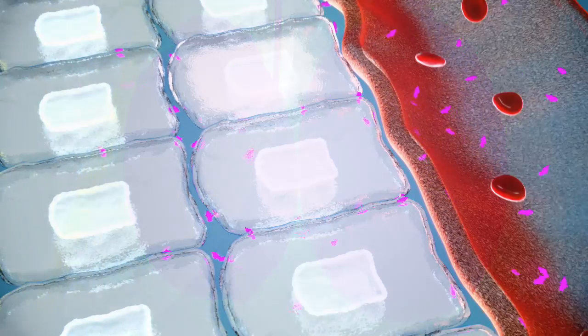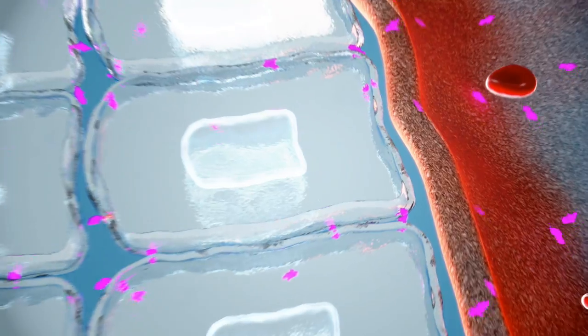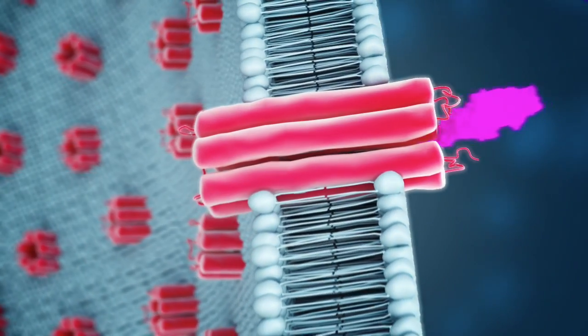LH binds to specialized testosterone-producing cells called Leydig cells found in the testicles. Leydig cells function as the primary factory to manufacture and deliver testosterone to the body.